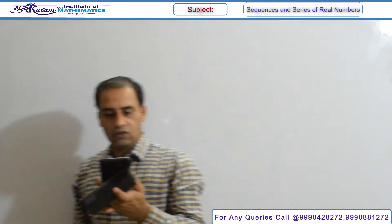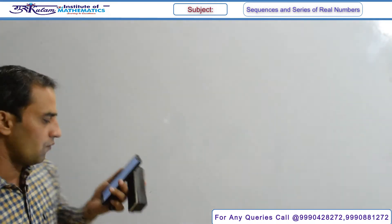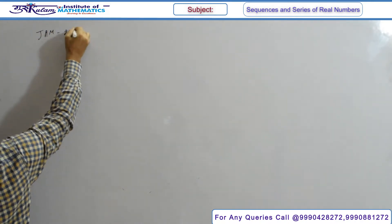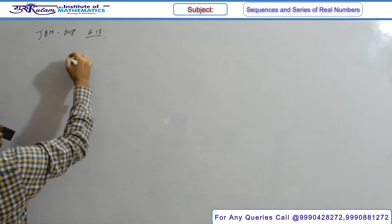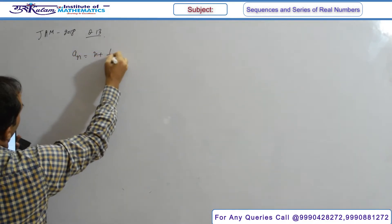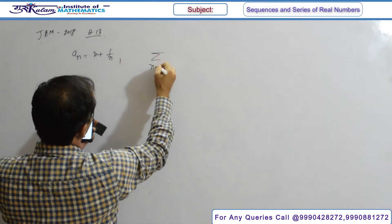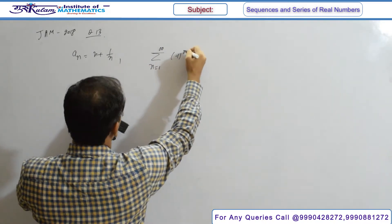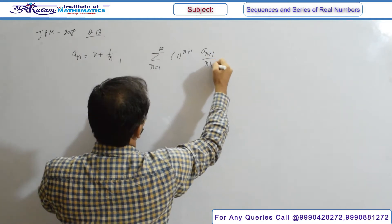This is question number 13 from JAM 2018. A series is given and you have to find its sum. In this question, a_n is equal to (n+1)/n, and we need to find the summation from n=1 to infinity of (-1)^(n+1) times a_(n+1) upon n factorial.